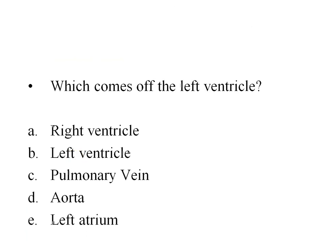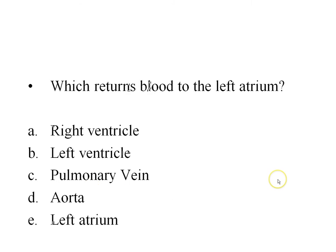Next question: what comes off the left ventricle? Pause and think about your answer. The left ventricle has the biggest artery in your body coming off of it, called the aorta. The correct answer is D.